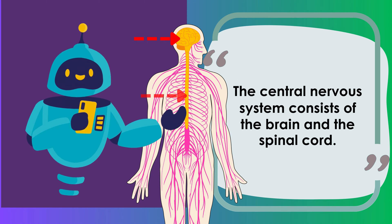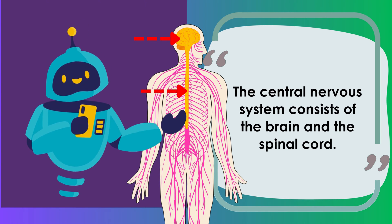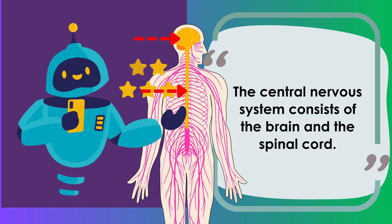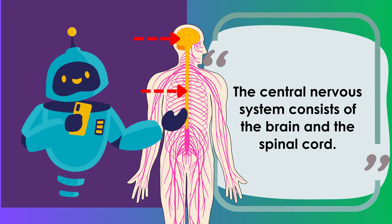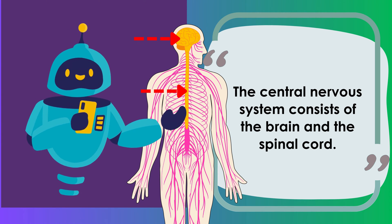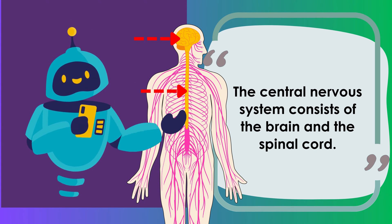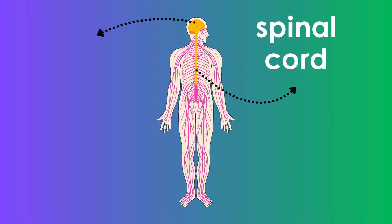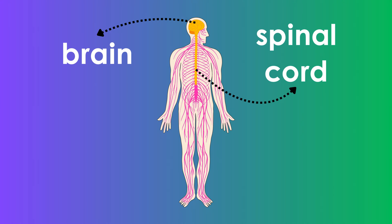Central Nervous System. The central nervous system consists of the brain and the spinal cord.